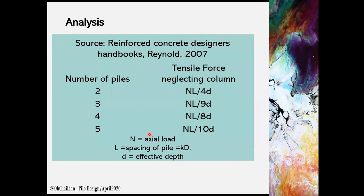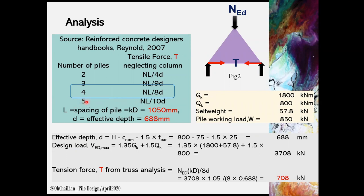For truss analysis, tension force can be obtained using the equations recommended by Reynolds. The equations for tension force shown were derived ignoring the column size. The symbol N is axial load, L is the spacing of the pile, and D is the effective depth of the pile cap. The limitation of the analysis using this truss method is the method is only valid for up to five numbers of pile. Figure 2 shows the concept of the truss method in determining the tension force T. For four numbers of pile use, the T can be obtained using NL over 8D, where the N is the VED maximum using 1.35 GK plus 1.5 QK. The spacing of pile is 1050 mm, and the effective depth is based on the transverse bar. D is 688 mm. Here we obtain the tension force T is equal to 708 kilonewton.